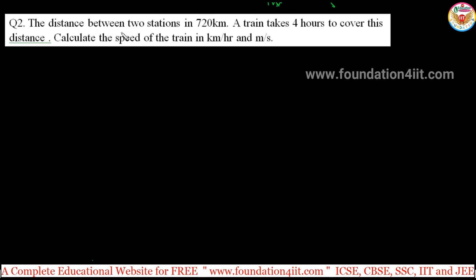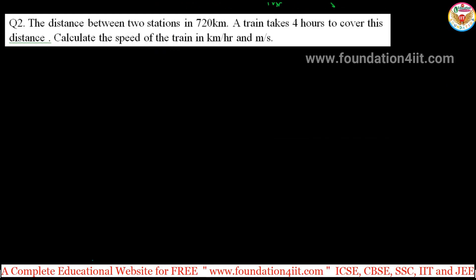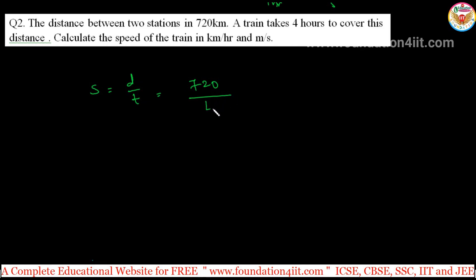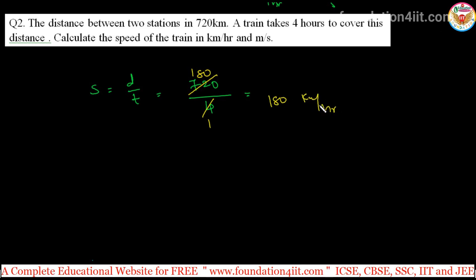A distance between two stations is 720 kilometers. A train takes 4 hours to cover this distance. Calculate the speed of the train in kilometers per hour and meters per second. Speed equals distance by time: 720 divided by 4 equals 180 kilometers per hour.